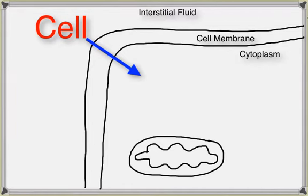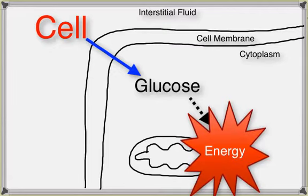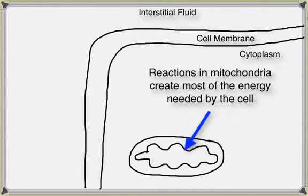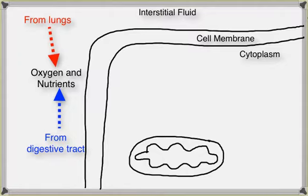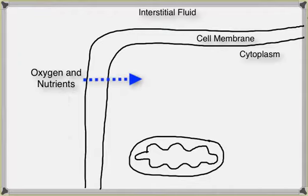Cells are little factories that break down organic molecules like glucose to obtain energy, which can then be used to create ATP. The reactions in the mitochondria provide most of the energy needed by the typical cell. Oxygen and nutrients are both required to carry out these reactions. Oxygen is absorbed in the lungs, and the nutrients are absorbed in the digestive tract, carried through the bloodstream and into the tissues, where the cells will absorb and use them.